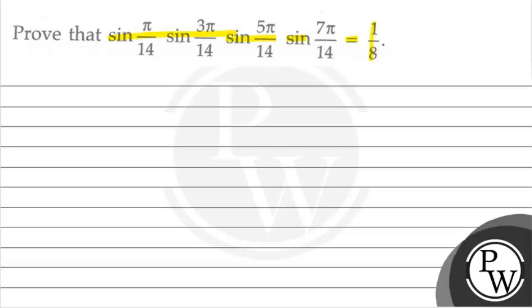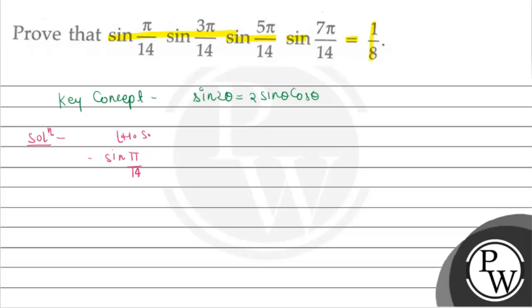Let's solve the question. The key concept for this question is sin(2θ) = 2·sin(θ)·cos(θ). On the LHS we have sin(π/14) · sin(3π/14).